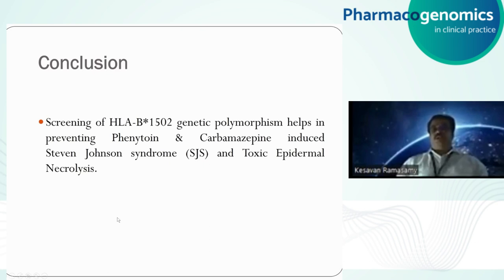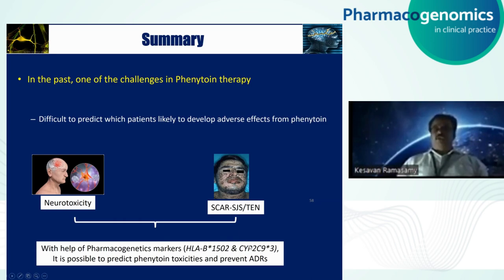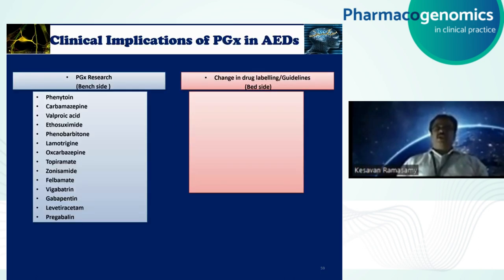In conclusion, screening for HLA-B*1502 for genetic testing helps in preventing phenytoin- and carbamazepine-induced Stevens-Johnson syndrome and toxic epidermal necrosis. One of the challenges presented for phenytoin toxicity — it was difficult to predict. But now, with the help of pharmacogenetic markers such as HLA-B*1502 and CYP2C9 star 3, we can predict that a patient would likely develop phenytoin toxicity or cutaneous adverse reactions.